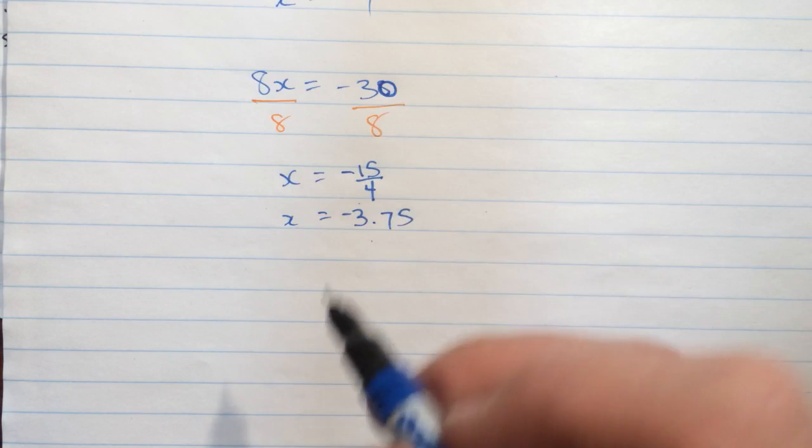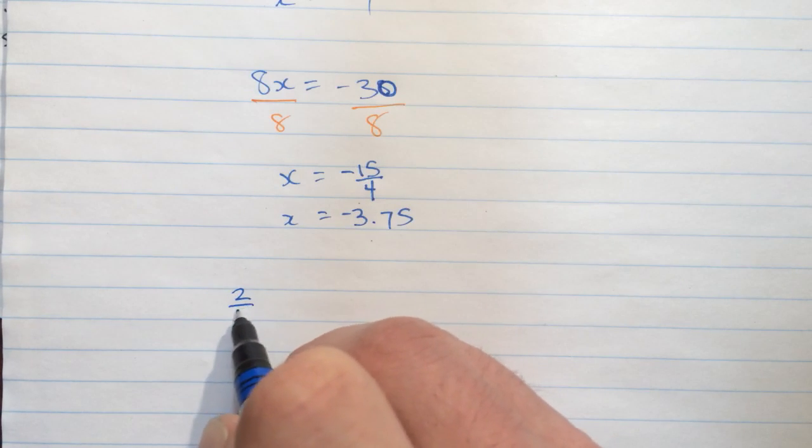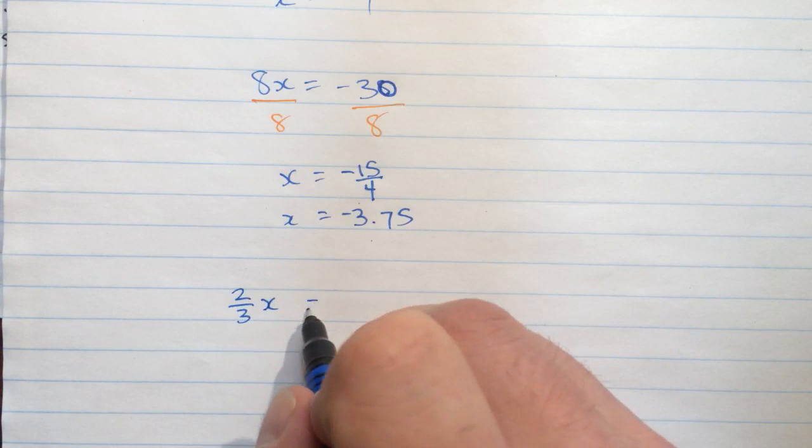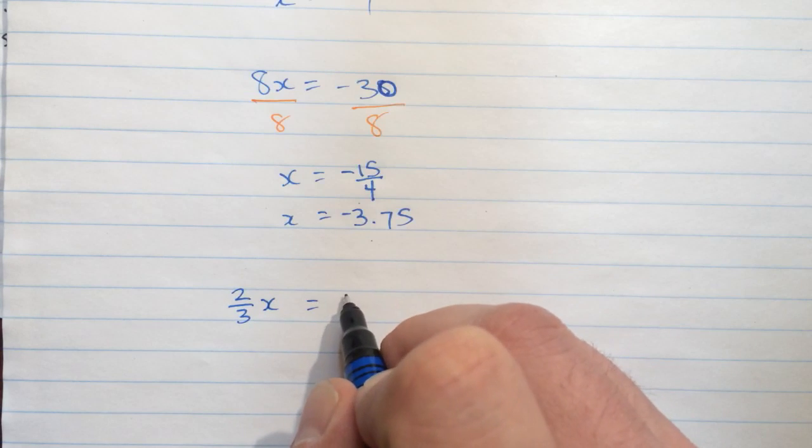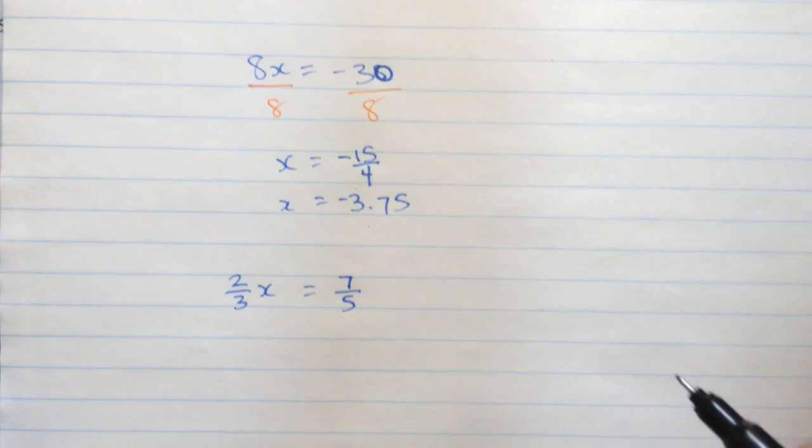Well, decimal is going to work in the same way. And let's do the fraction, though, because it's a little bit more interesting. What if 2 thirds of x, 2 thirds times x, equals, let's say, 7 fifths? That's fairly gross looking, right?